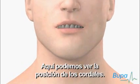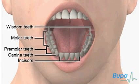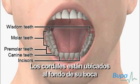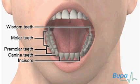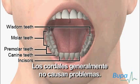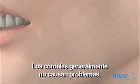Here we show the position of the wisdom teeth. Wisdom teeth are located at the back of your mouth and develop after all the other teeth. Wisdom teeth don't usually cause problems.